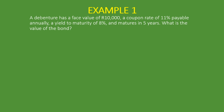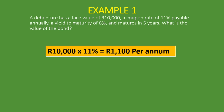First, we calculate the annual interest payment. We take the face value of R10,000 and multiply it by the coupon rate of 11%, which gives us R1,100 per annum. Since the debenture matures in five years, as the investor we will receive R1,100 every year for the next five years. To get the market value — the present value of the debenture — we need to discount all future cash flows back to today.